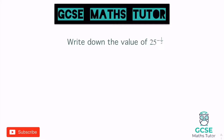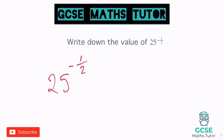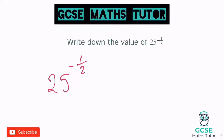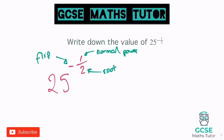So this first one, we've got 25 to the power of negative a half. When it comes to these powers, we just need to remember what each piece does. The negative part of the power does the reciprocal — it flips it over. The number on the bottom, which I like to refer to as ground level, does the root. So in the case of a 2, that would be a square root; if it was a 3, it would be a cube root and so on. And the number on the top is just a normal power.